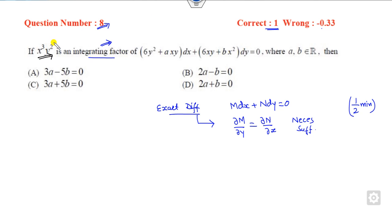Since this is the integrating factor, you have to multiply this with here and here. You can equate the coefficient of dx. If you multiply them it will be 6x^3y^4 plus ax^4y^3. What is N? If you multiply this term here it will be 6x^4y^3 plus bx^5y^2.